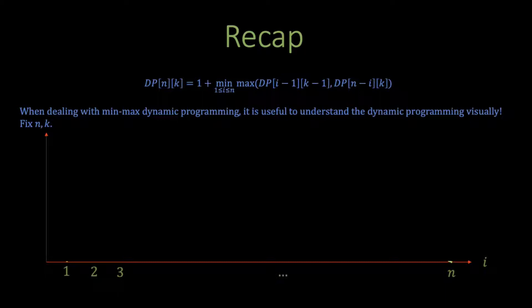So, I'll first plot my axes, and I'll put i as the x-axis. Now, let us try to draw this recurrence part by part. The first term in the recurrence is DP[i-1][k-1]. Now remember, k is fixed, so we can think of k-1 as just any other number. However, as you vary i, the value of DP[i-1][k-1] changes. Now, take a minute and think about how the value of DP[i-1][k-1] changes as you increase i. Simply use the definition of DP[i-1][k-1] to deduce this.